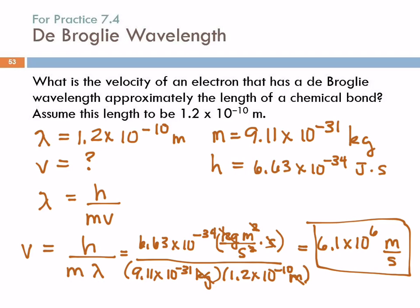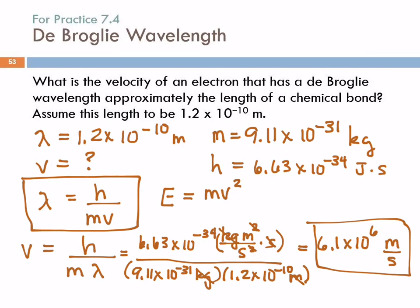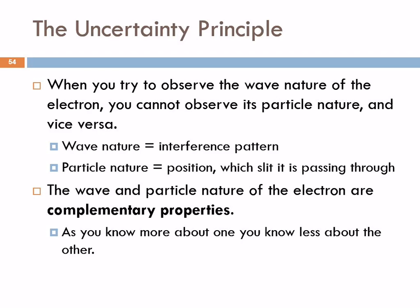One of the things you need to be able to do is take the de Broglie relation and combine it with other equations to find things out — kinetic energy is ½mv², and λ = c/ν. You could be given a problem where you have to use more than one of those equations and think about things. It's not a matter of me teaching you one kind of problem and then giving you that exact problem on the exam. The uncertainty principle is next.